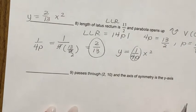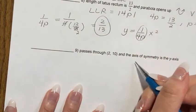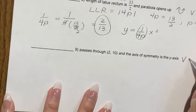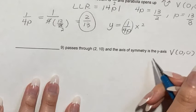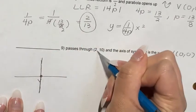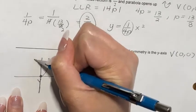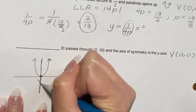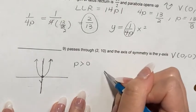Example 9: parabola passes through (2, 10), axis of symmetry is the y-axis, vertex at origin. Since the axis of symmetry is the y-axis and the point (2, 10) is above the x-axis, the parabola opens up, so p > 0.